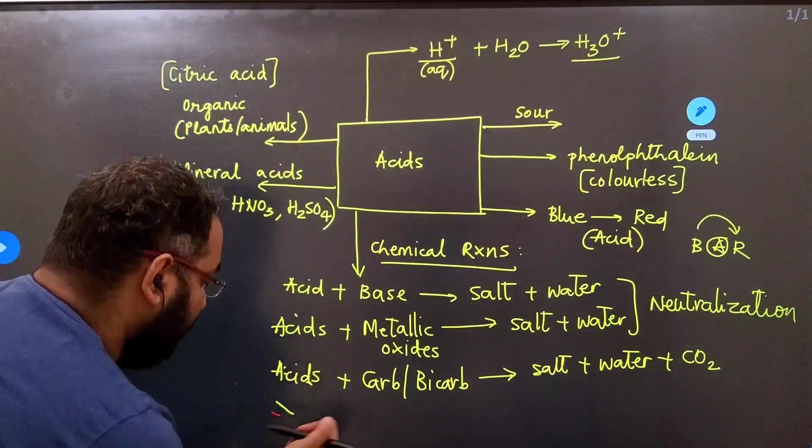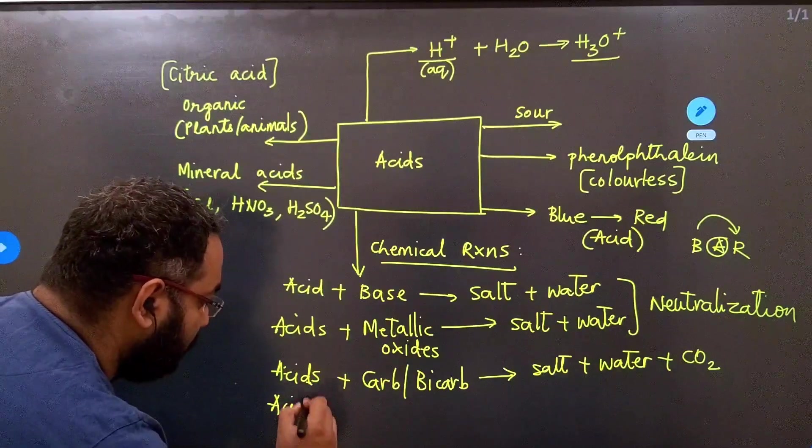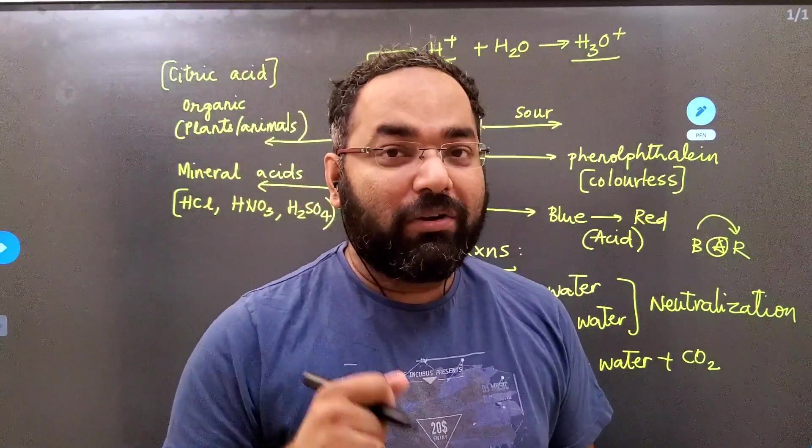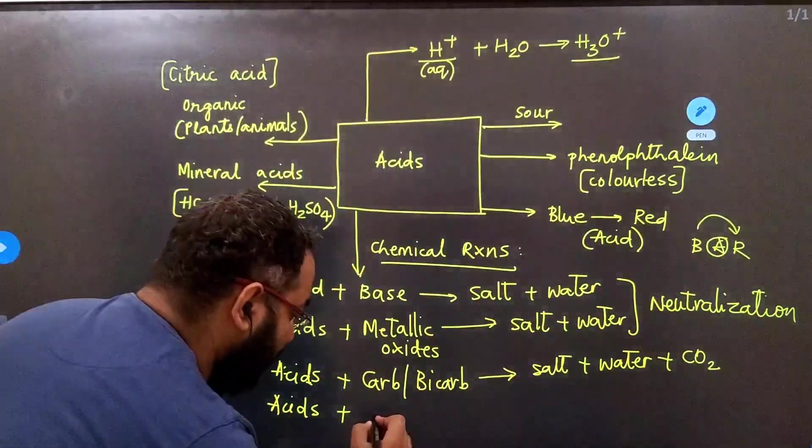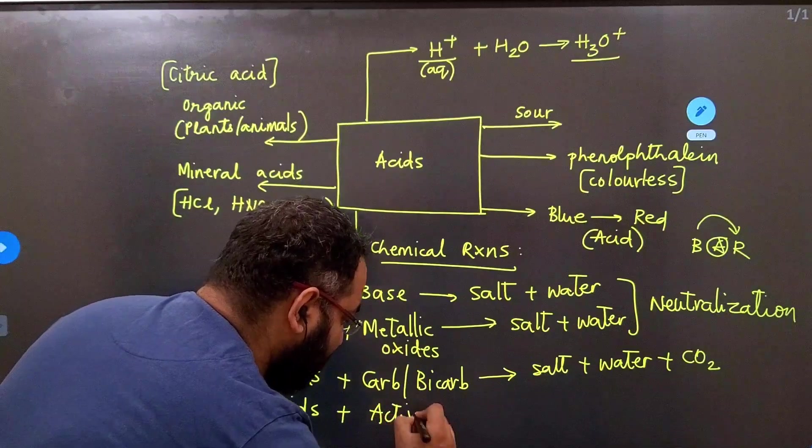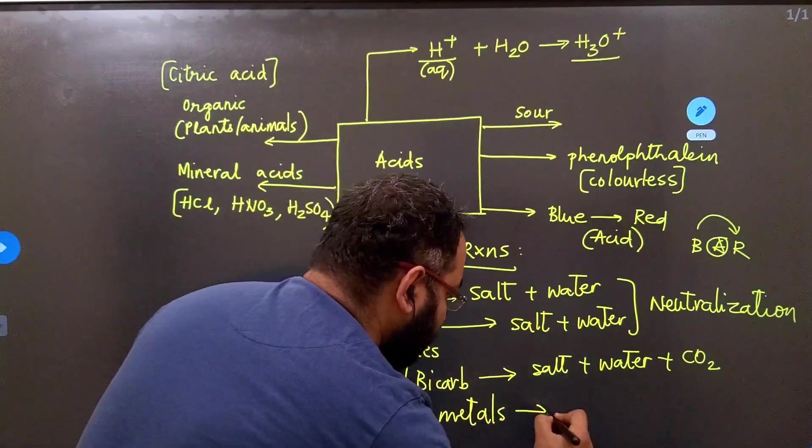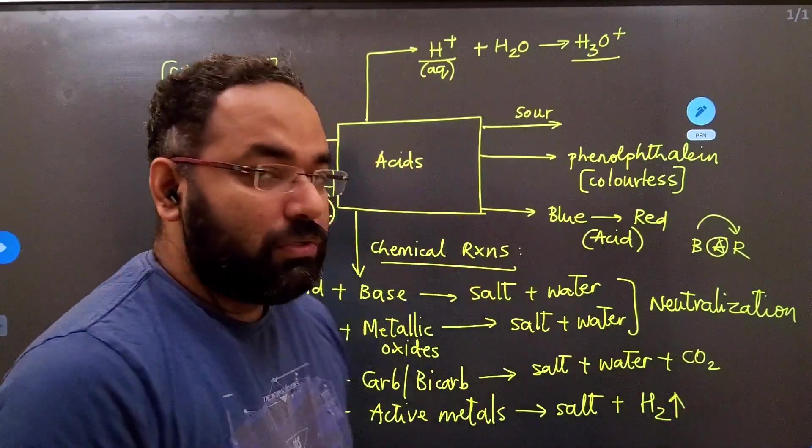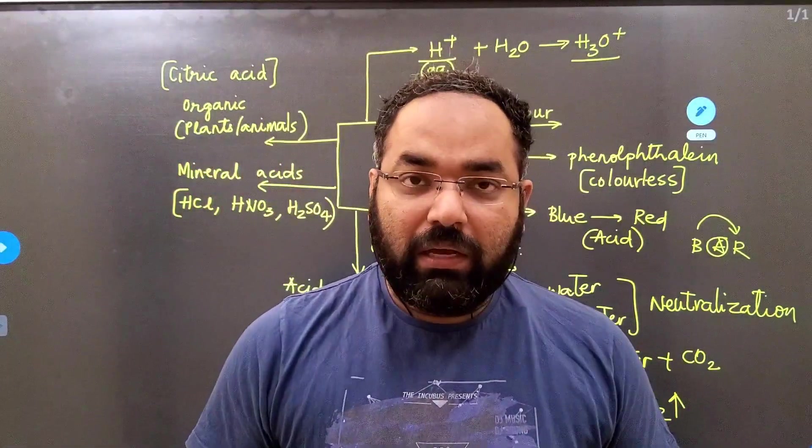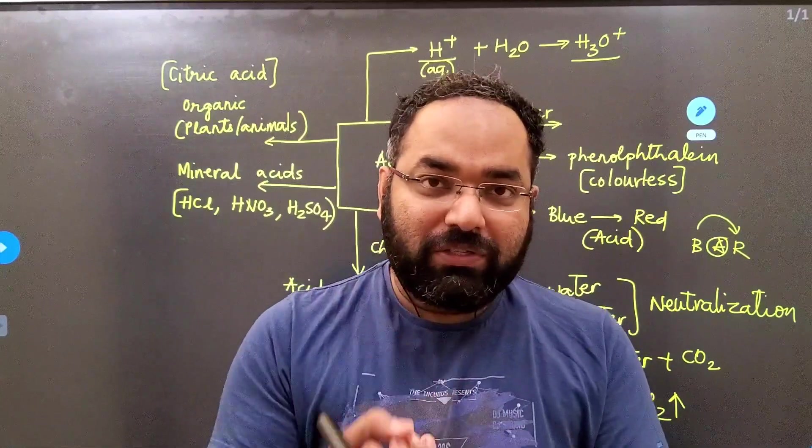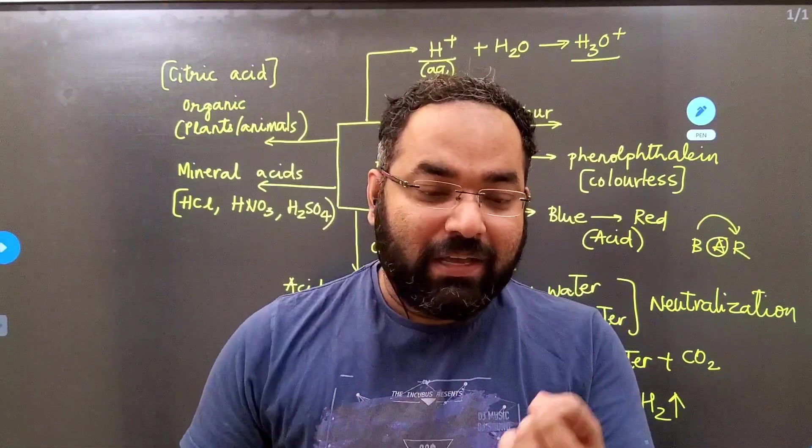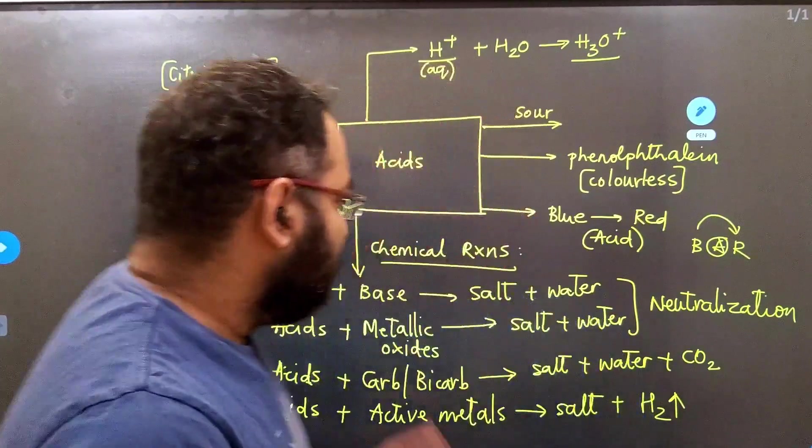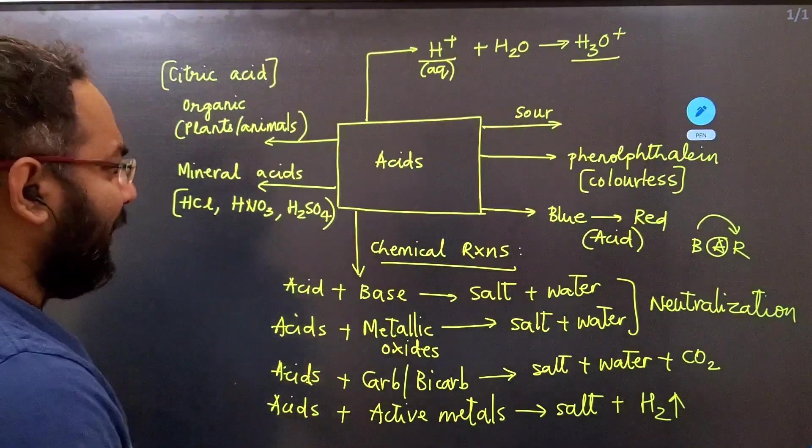And the last one is whenever we look at any active metal. Now all of you, hopefully, will remember what active metals are. All metals that are placed above hydrogen in the reactivity series are active metals. The first thing that it is going to give you is salt. And the second product it is going to give you is hydrogen gas. And all of us know the test for hydrogen gas as well. Whenever you bring a burning matchstick to the mouth of the test tube where hydrogen gas is getting liberated, the fire of the matchstick is extinguished with a pop sound.